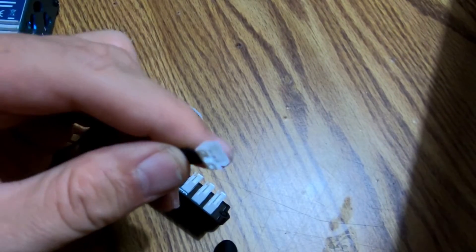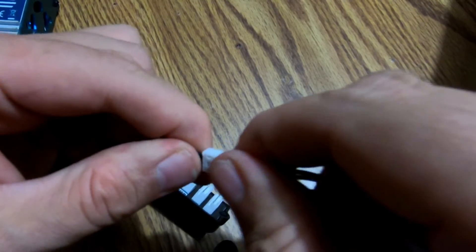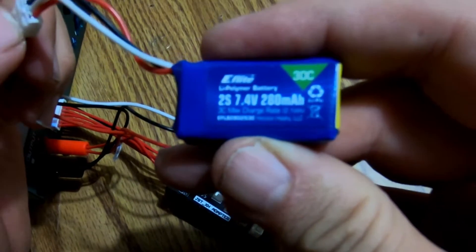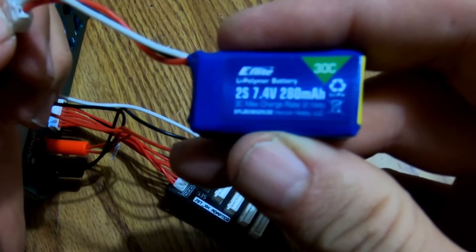So now I'm going to plug in the battery to the battery side of the adapter here, like so. And again, this is the little E-Flight two cell 7.4 volt, 280 milliamp pack, 30C.